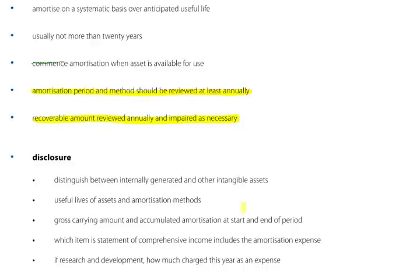For disclosure, distinguish between internally generated and other intangible assets. Useful lives of assets and amortisation methods should be disclosed. The gross carrying amount and accumulated amortisation, both at the start and end of the period, should be disclosed. Also disclose which item in the Statement of Comprehensive Income includes the amortisation expense, and if it is research and development, how much has been charged this year as an expense.